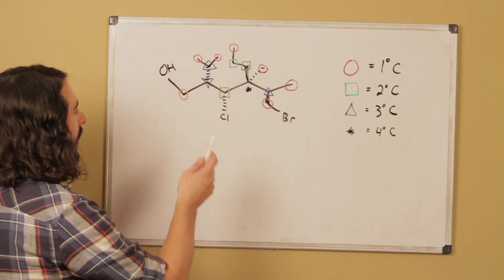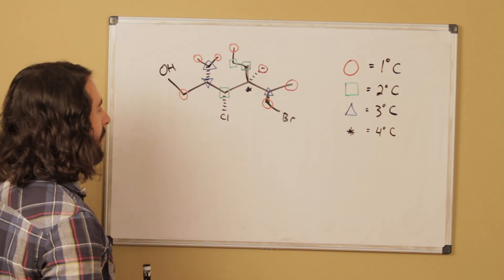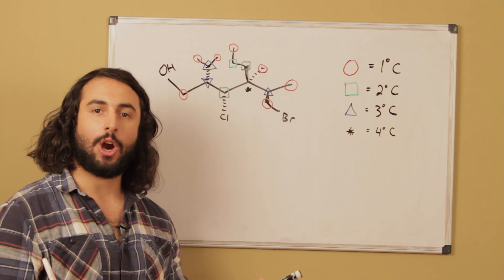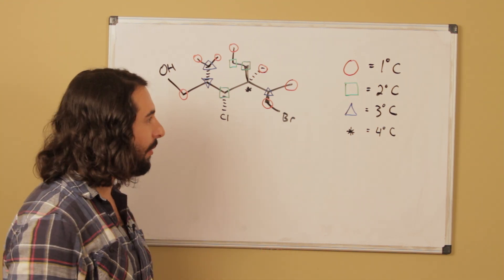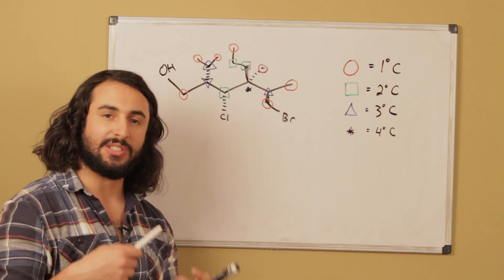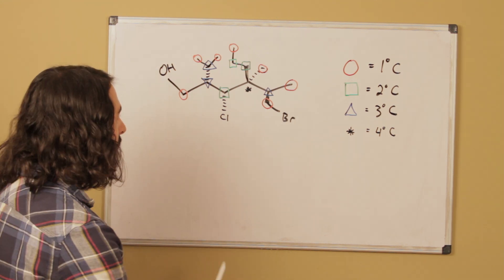So looking first at the primary carbons, any carbon that is connected to just one other carbon is a primary carbon. So going from left to right, this carbon is primary because it is connected to one other carbon. It does not matter that there is a hydroxyl group because only carbons count in terms of the way we're labeling these.